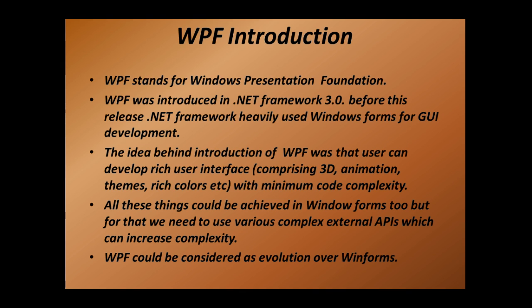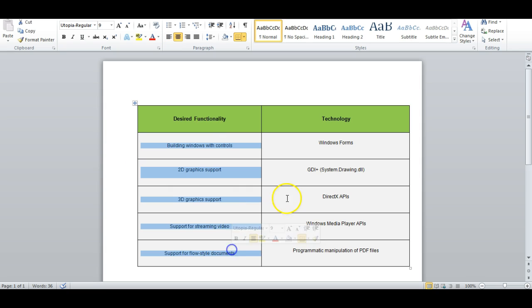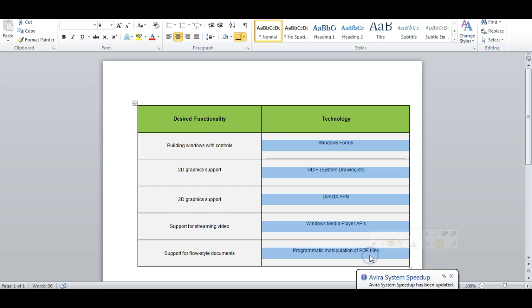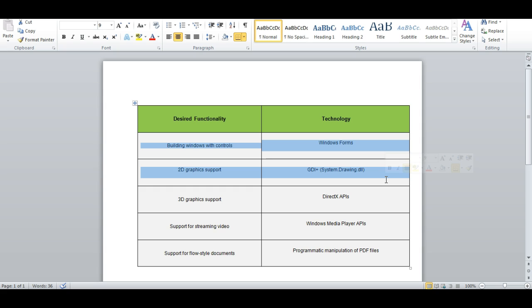I have a document here, so let's look into that first. The document has two columns: desired functionality and technology. All these desired functionalities require specific technologies to build them. For example, if you are building windows with controls you will require Windows Forms, and if you want 2D graphic support you will need GDI+. By default, Windows Forms is equipped with GDI+ and Windows Forms itself, which enables us to develop basic applications.